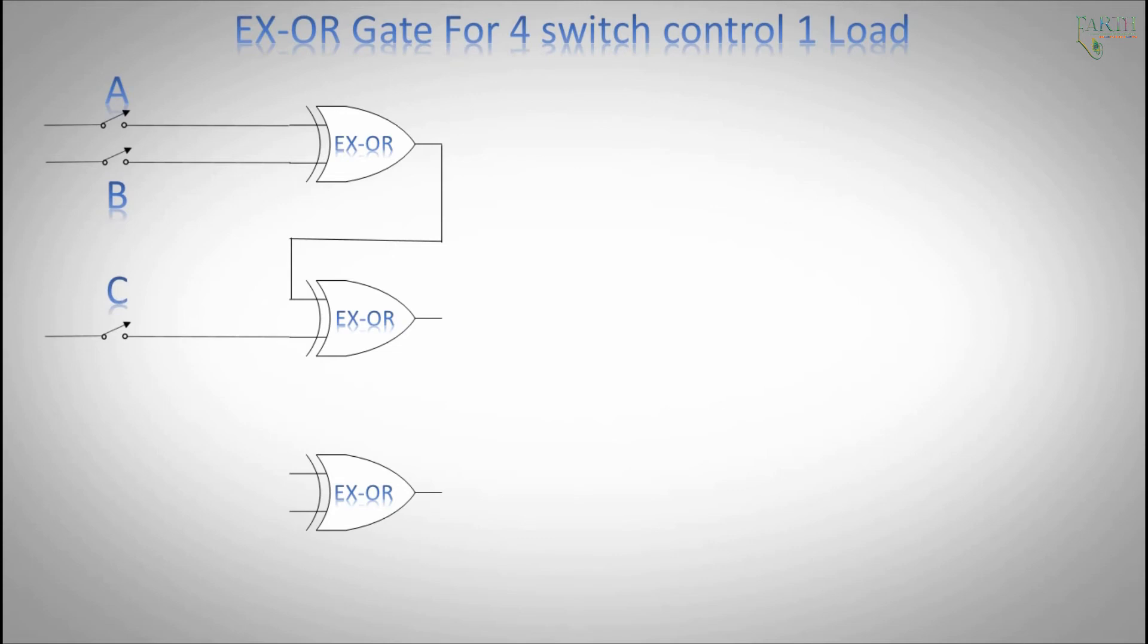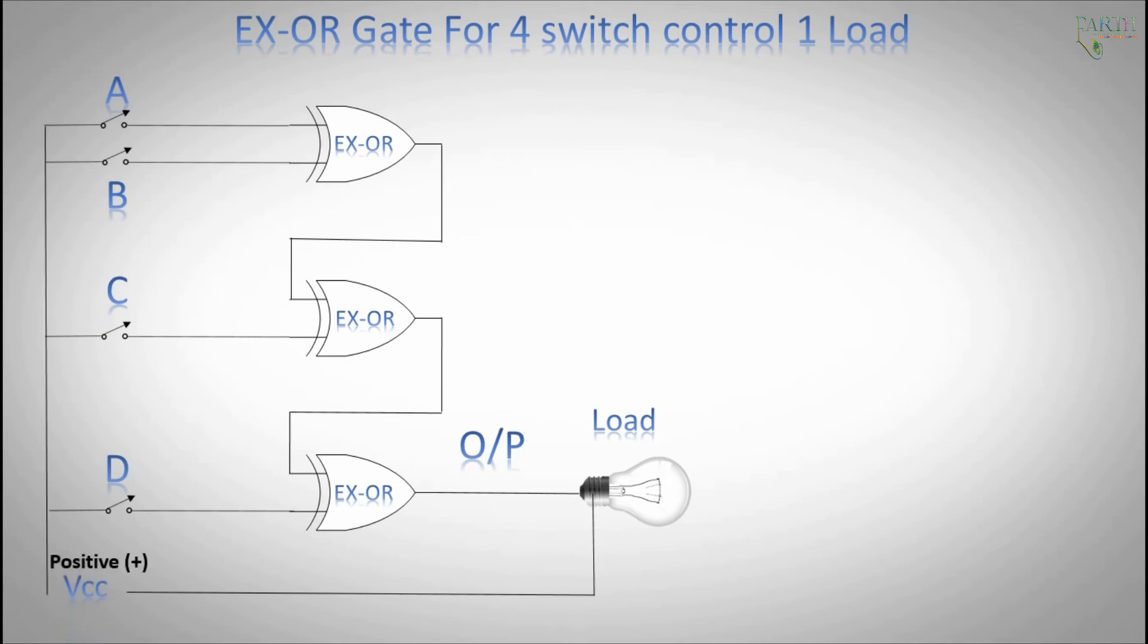Input C single terminal. Second XOR output signal to third XOR input A connection. Input D single terminal. XOR output load. VCC positive, negative.